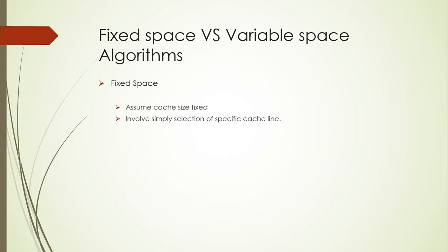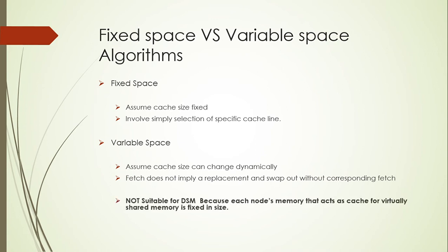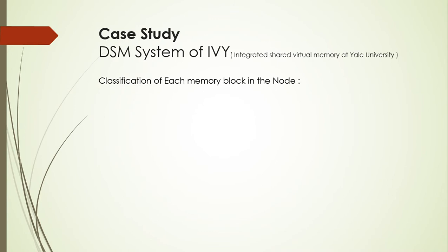Variable-space algorithms assume the cache size is dynamic. They do not apply placement and swap-out without a corresponding fetch. Variable-space is not useful or implementable on DSM systems because the memory that acts as cache for virtual shared memory is fixed in size.